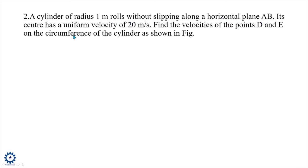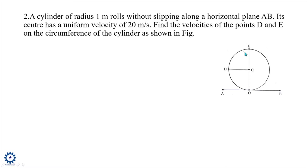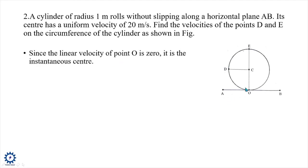Problem 2: A cylinder of radius 1 meter rolls without slipping along a horizontal plane AB. Its center has a uniform velocity of 20 m/s. Find the velocities of points D and E on the circumference. When a cylinder rolls over a horizontal plane, the Instantaneous Center is at the point of contact with the surface, where the linear velocity is zero.